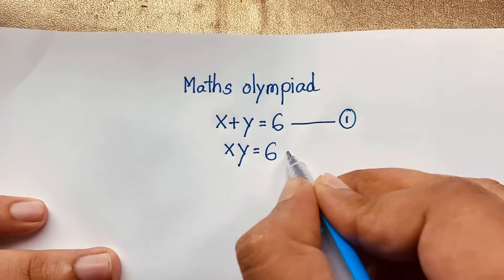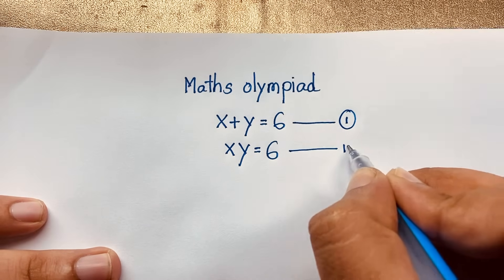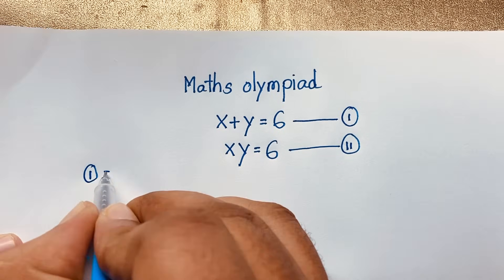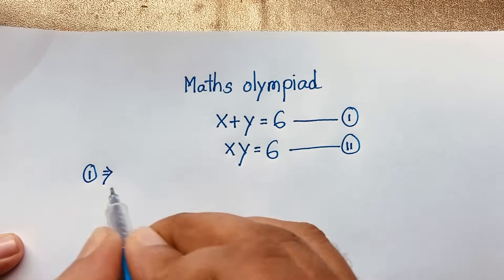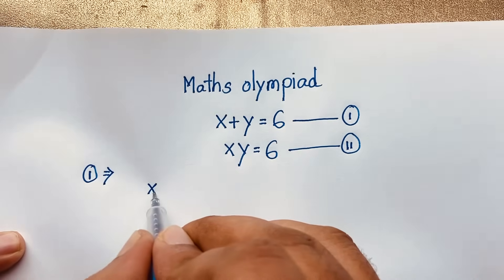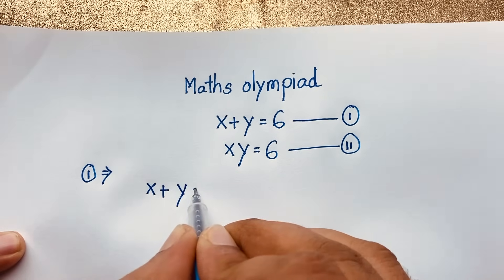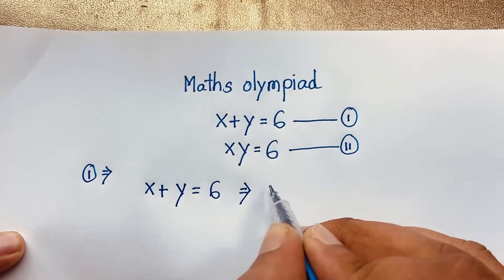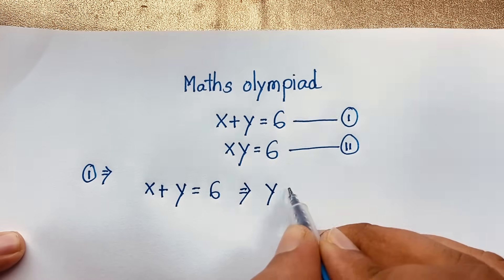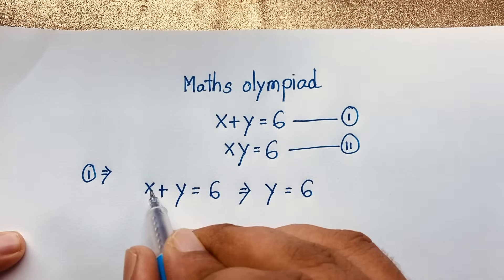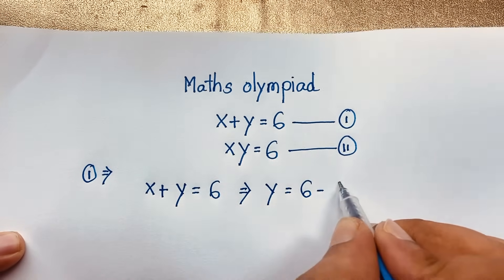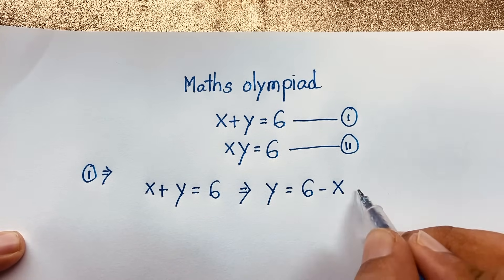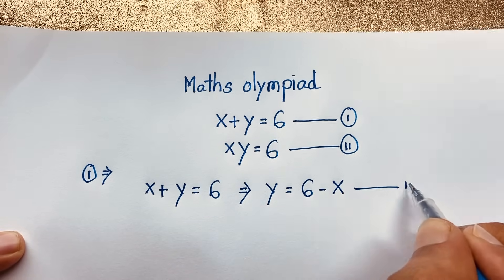This is our first equation and this is our second equation. First of all, I take our first equation, which is x plus y is equal to 6. You can see here, y is equal to 6, and if I move x to the other side, it will be negative x. So we will find out y is equal to 6 minus x. This is our third equation.